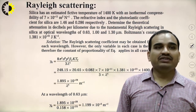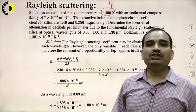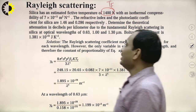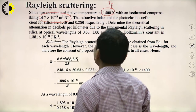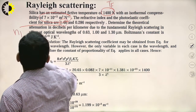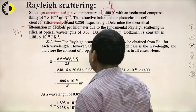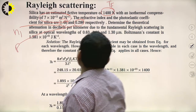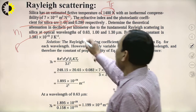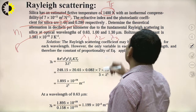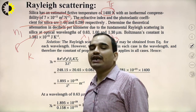Let us solve a numerical based on Rayleigh scattering. Silica has an estimated fictive temperature Tf = 1400 K, with isothermal compressibility βc given, refractive index n1 = 1.46, and photoelastic coefficient p = 0.286. We need to determine the theoretical attenuation in dB/km due to fundamental Rayleigh scattering at three optical wavelengths λ1, λ2, and λ3, using the given Boltzmann constant k. We use the γr formula to calculate the coefficient first and then calculate the attenuation.